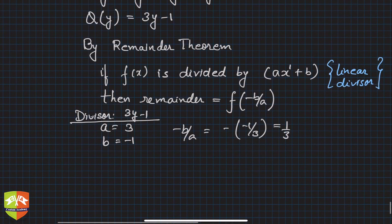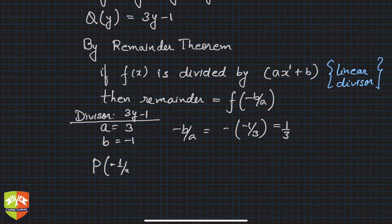Hence, we simply need to find f(-b/a), and in this case f is P, so P(1/3). P(1/3) will be the remainder. The remainder is the value of the polynomial at the variable equals -b/a. In this case, y = 1/3. If we calculate P(1/3), we get the remainder.